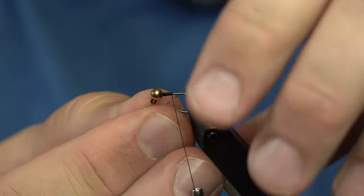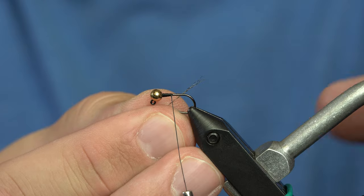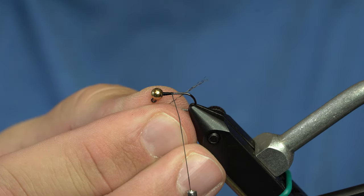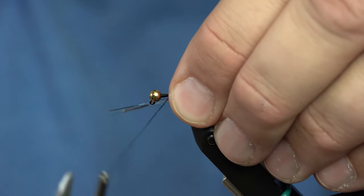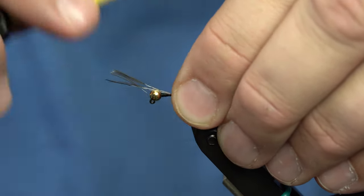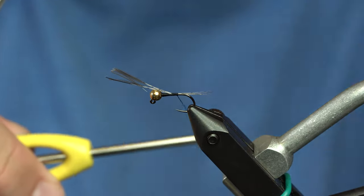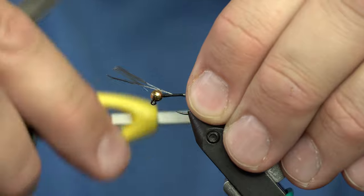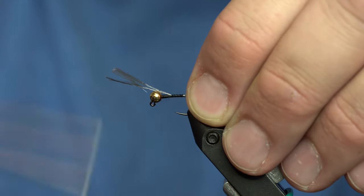Okay, for the tail, I'm going to put on some Coq de Leon here. And to get it to length, I like to just put it at an angle behind the hook, pinch it in place, and then my first thread wrap should pull that right up on top of the hook shank like that. And now we've got a nice length on that tail.